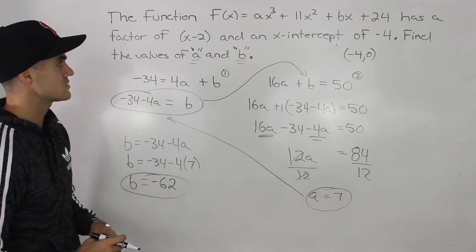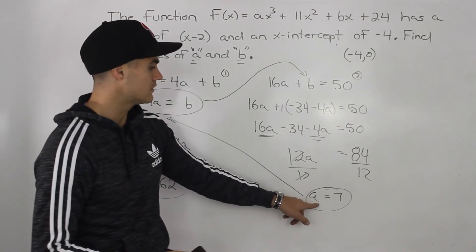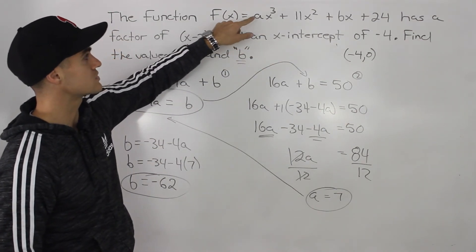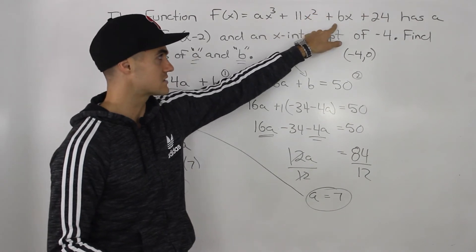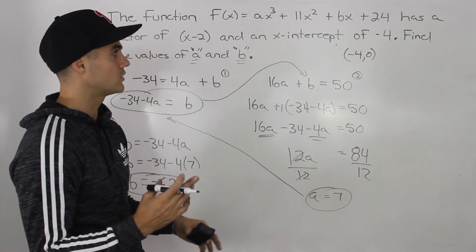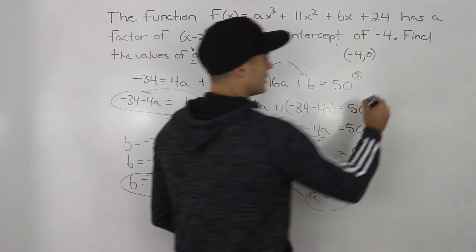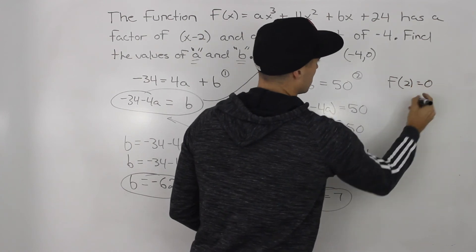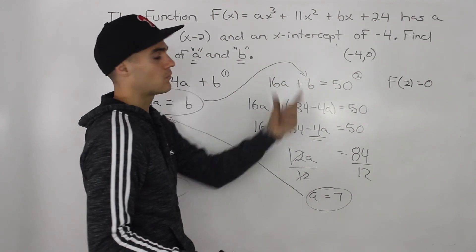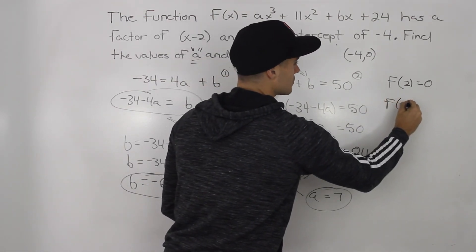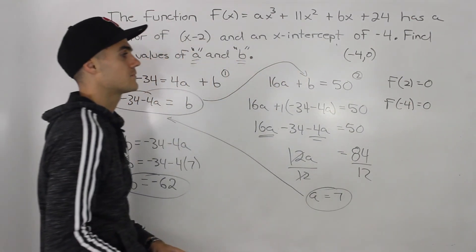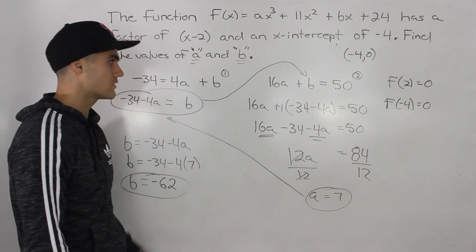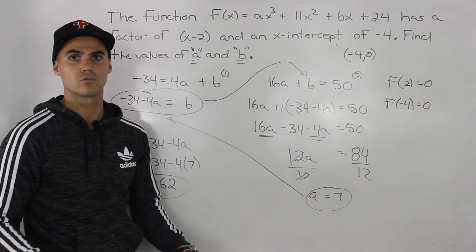And you can always check your answers with these types of questions. What you can do is you could plug in this a value of 7 up here. It's b value of negative 62 here. So your polynomial would be f(x) equals 7x cubed plus 11x squared minus 62x plus 24. And then taking that polynomial function with all of its leading coefficients, you can make sure that those original expressions that we make hold. So you can make sure that f(2) equals 0, plug in all the x values as 2, make sure that you got a y value 0, and you can make sure that this coordinate holds, this x intercept of negative 4. So you could plug in negative 4 for all the x values, make sure that y value is equal to 0, and when you do that with this a and b value, you would get those expressions to hold. So those are your final answers.